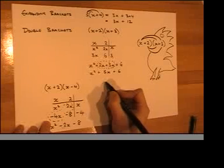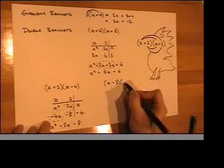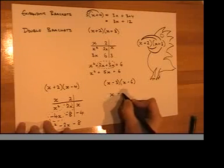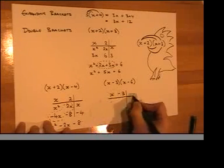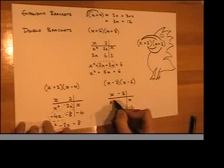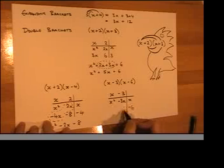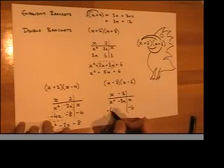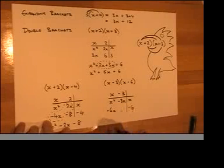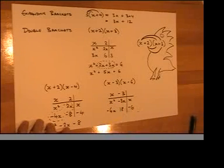And lastly, one last example we'll have a look at. Something like x minus 3, x minus 6. So, we've got two minuses here. Nothing to worry about. Just be careful. x times x, x squared again. Minus 3 times x, minus 3x. Minus 6 times x, minus 6x. And minus 3 times minus 6. Minus times a minus makes a plus, a positive. I'm not going to put the plus in.